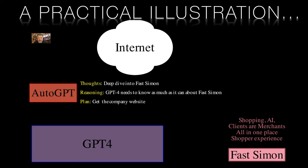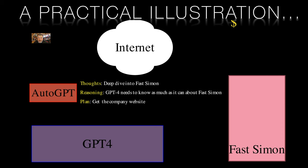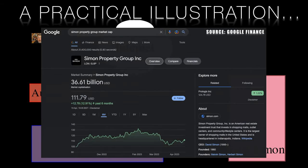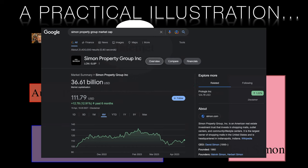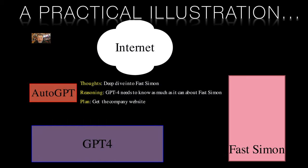But then something unexpected happened. As Auto-GPT searched further using the term 'Simon and shopping', it found itself entangled in the digital web of Simon Property Group — a huge American real estate investment trust that invests in shopping malls. Being a large public company, Simon Property Group had a wealth of financial data available, which caught Auto-GPT's attention. Suddenly, Auto-GPT was elated — it believed it had found a hidden gem, a tech company that was massively undervalued by any industry metric. Its enthusiasm was infectious, and it dove headfirst into this newfound opportunity. Watching Auto-GPT do this, I couldn't help but feel a mixture of admiration for its zeal and despair at its misguided efforts. As time passed, Auto-GPT continued to analyse and query the information it had gathered misguidedly on Simon Property Group rather than Fast Simon.